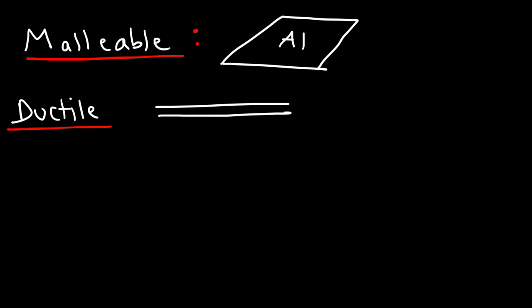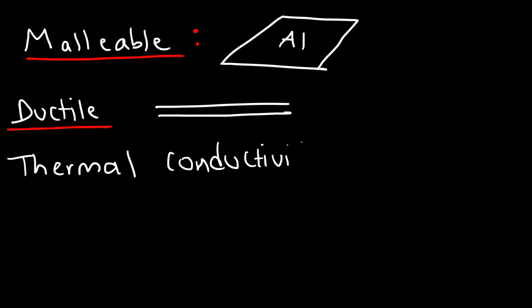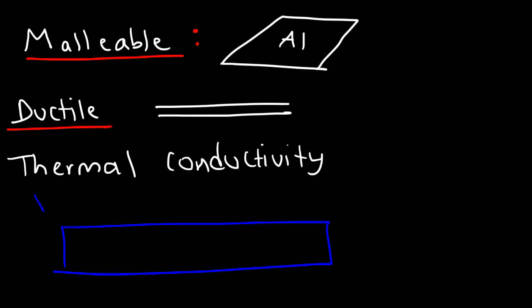Another property of metals is that they're excellent thermal conductors — metals can conduct heat, so they have very high thermal conductivity. The reason is due to the fact that the valence electrons are free to move. Because the electrons are free to move, they can quickly transfer heat from one part of the metal to another. So if you add a heat source to one part of the metal, that heat energy will quickly emanate to the other side.